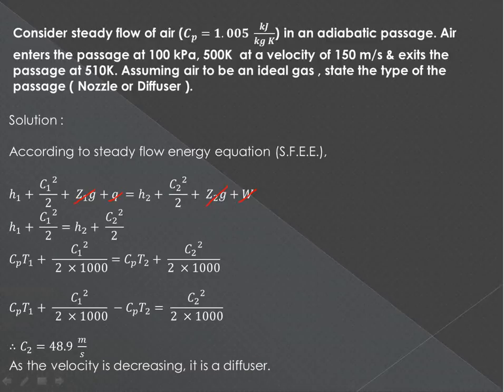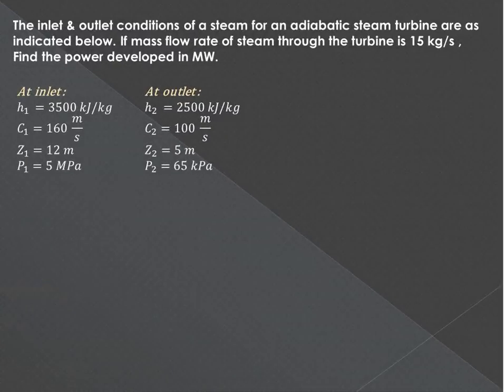For the steady flow process of air, in this particular case the inlet and output conditions for the adiabatic steam turbine are given. Values of h1, then velocity, datum, and pressure - they are given. At output also the corresponding values are given, and we have to find out what will be the power developed in megawatt.